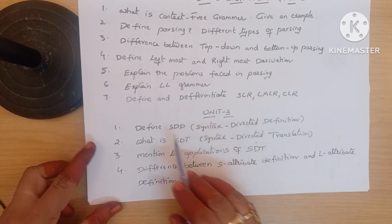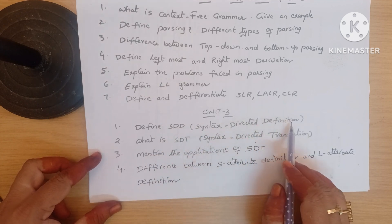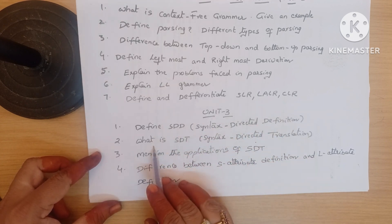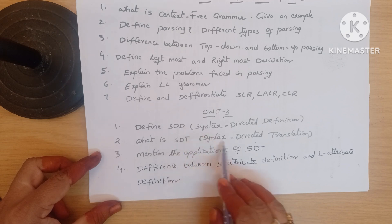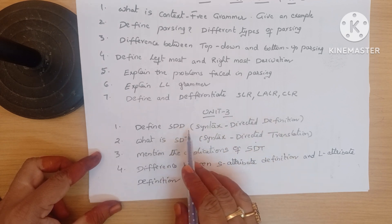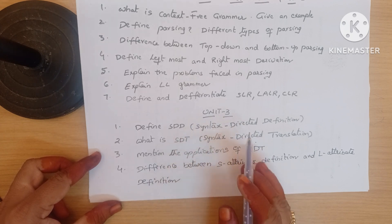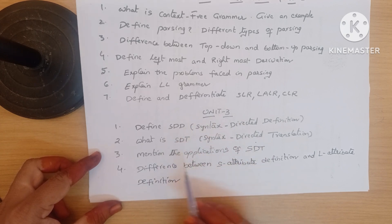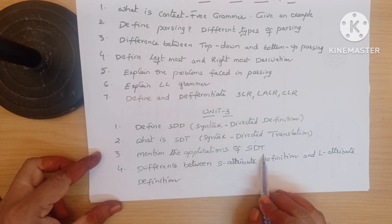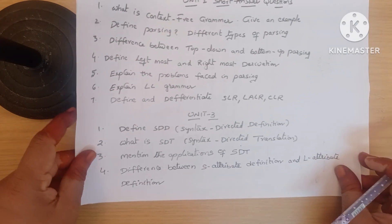Unit 3 questions: define SDD — syntax directed definition. Second: what is SDT — syntax directed translation — or the difference between SDD and SDT. Whatever they ask, learn the concept of both. Next: mention the applications of SDT. Next: difference between S-attribute definition and L-attribute definition.